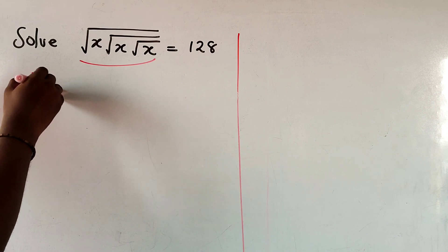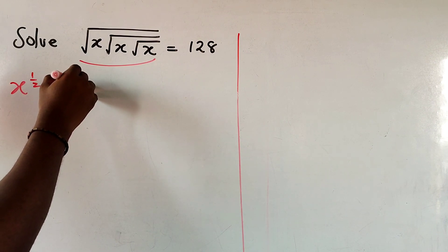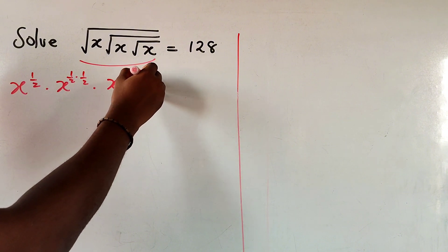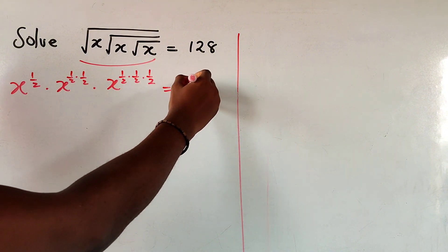Now we know we can write this as x to the power of 1 over 2 times x to the power of 1 over 2 times 1 over 2 times x to the power of 1 over 2 times 1 over 2 times 1 over 2 equals 128.